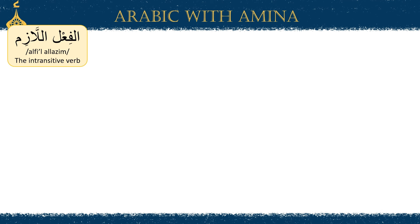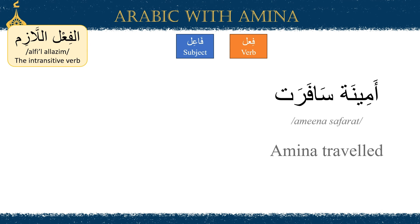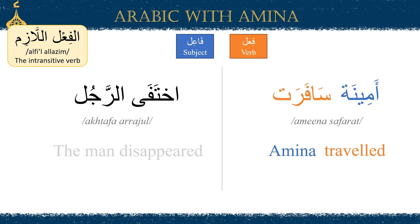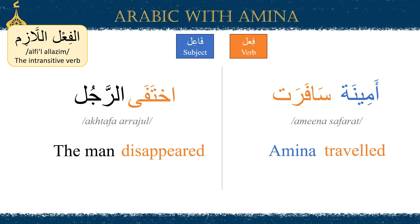Let's talk a little bit more about al-fi'l al-laazim. It only requires two things: a fi'l or verb, and a fa'l, the subject. For example, 'amina safarat' — the verb here is 'traveled' and the subject is Amina. Another example: 'The man disappeared' — the verb here is 'akhtafa' and the subject is the man, or al-rajul.